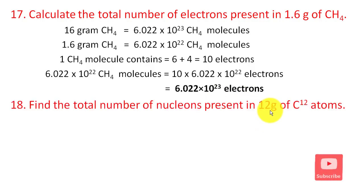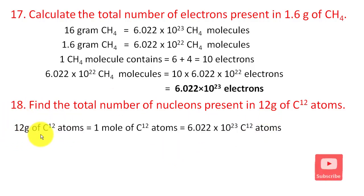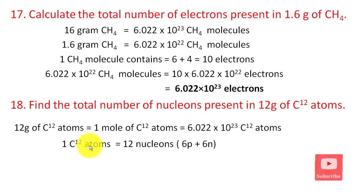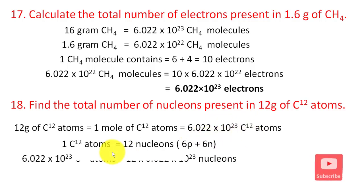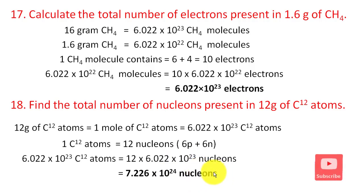The next question: find the total number of nucleons present in 2.0 grams of carbon atoms. Nucleons include protons and neutrons in the nucleus. 2.0 grams of carbon contains 6.022 × 10²³ carbon atoms per mole. Each carbon atom has 12 nucleons (6 protons + 6 neutrons). The answer is 7.226 × 10²⁴ nucleons present.